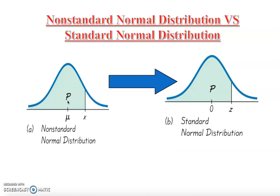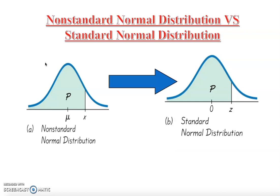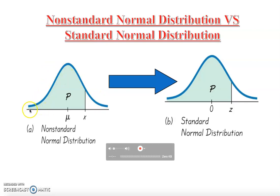Every face — it doesn't matter whose face it is — has a normal shape. Normal distribution is symmetric on both sides. On the left side is the negative and in the middle is the center.